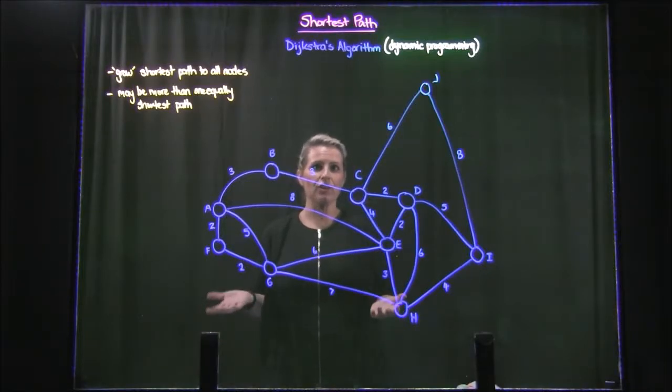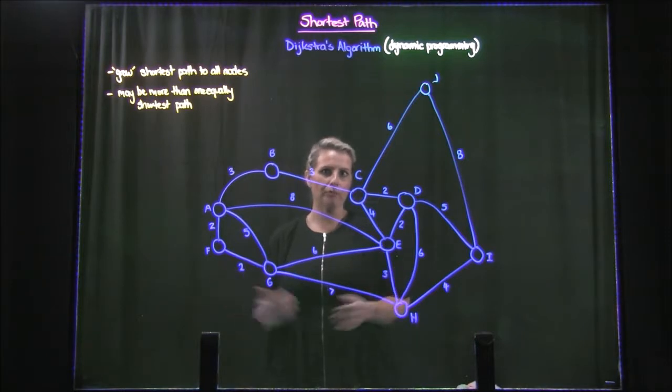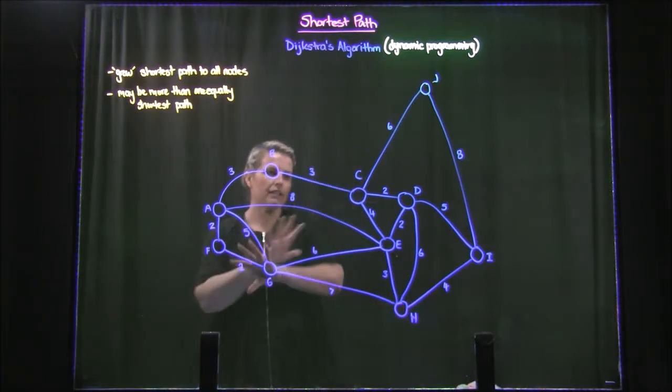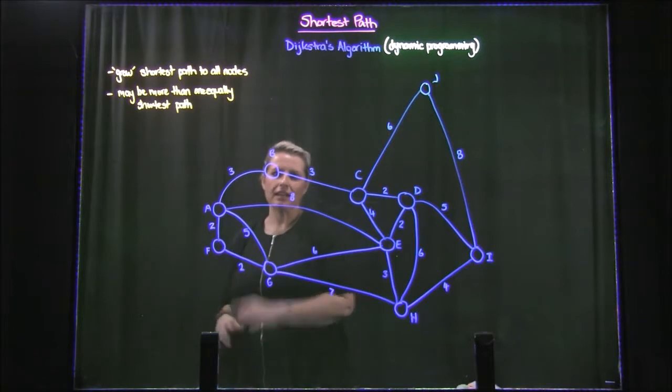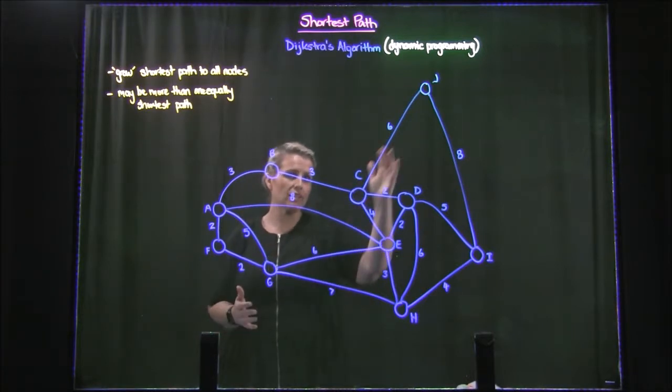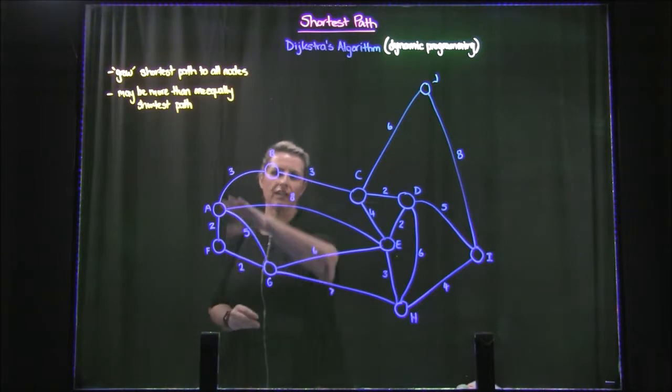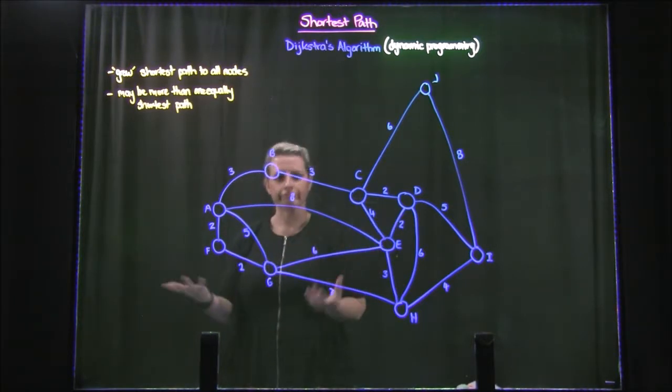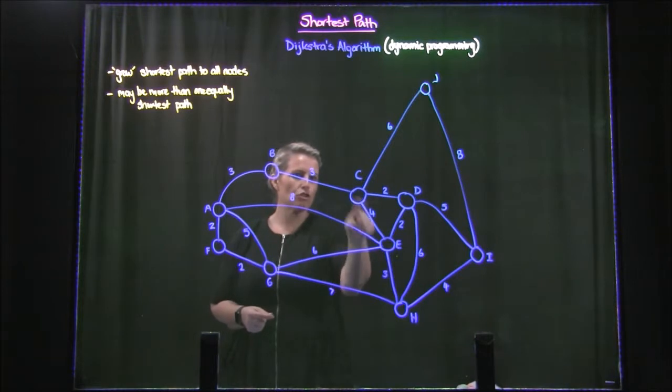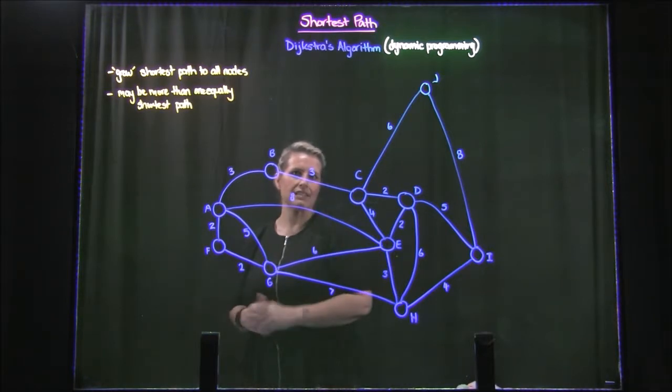All right, so this video is going to go through finding the shortest path in a network. So I've got here a network drawn. You can see that each of the nodes are represented with circles. They're all labeled and given a letter, so nodes are indicated with A, B, C, D, etc. All of the edges or arcs are indicated as the joins between the nodes, the connections, and each of those connections have a distance on them.